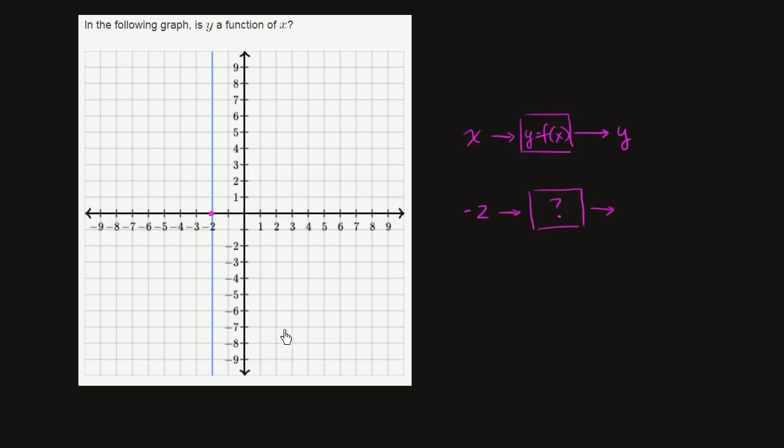Do we get exactly one thing? No, we put in negative 2 here, we could get anything. Negative 2, the point negative 2, 9 is on this relation. Negative 2, 8 is on this relation. Negative 2, 7, negative 2, 7.5. Negative 2, 3.14159. They're all on this.